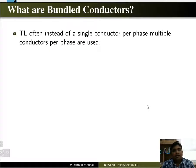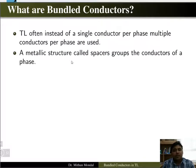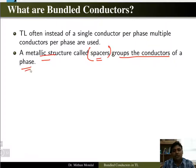So what are bundle conductors? Generally in a transmission line, instead of using a single conductor, we will use multiple conductors per phase. There is a metallic structure known as spacers. Spacers are the metallic structures that group the conductors per phase, so any phase can have two or three conductors grouped using spacers.